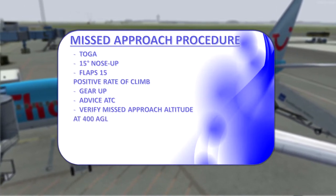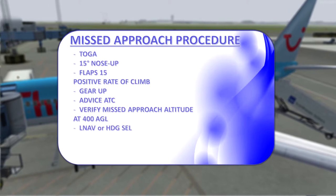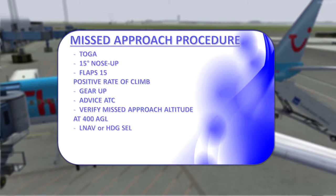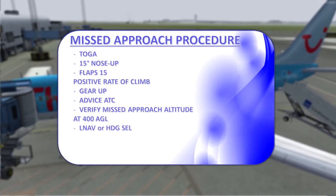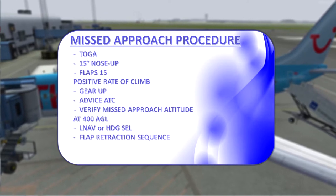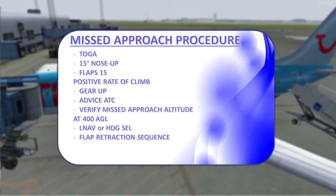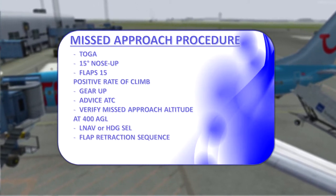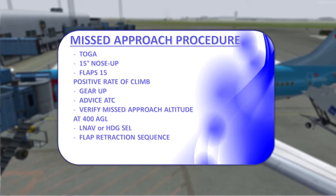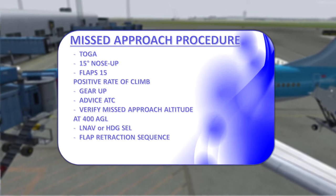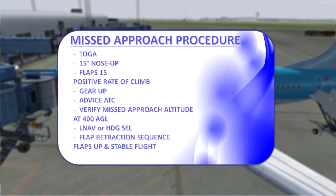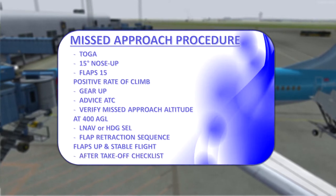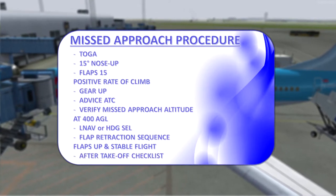Above 400 feet above ground level we will engage LNAV or heading select as appropriate. Meanwhile, as the speed increases, we will raise the flaps — initially to flaps 5 at the speed of Vref plus 15 knots, and so forth at the appropriate speeds. Once flaps have been fully retracted and we are stable on the missed approach, we will execute the after takeoff checklist, which completes the missed approach procedure.